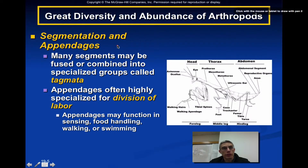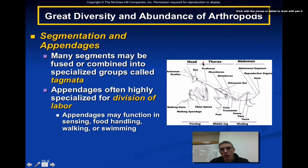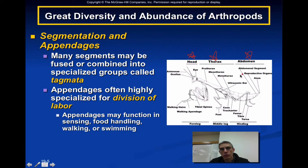Arthropods are segmented, but many segments are fused or combined into specialized groups — somewhat different from annelids. We call these specialized groups tagmata. As seen with the praying mantis, most insects have three primary segments: abdomen, thorax, and head. Each is considered a tagmata, and each is highly specialized — there's a division of labor between the different parts of the animal.